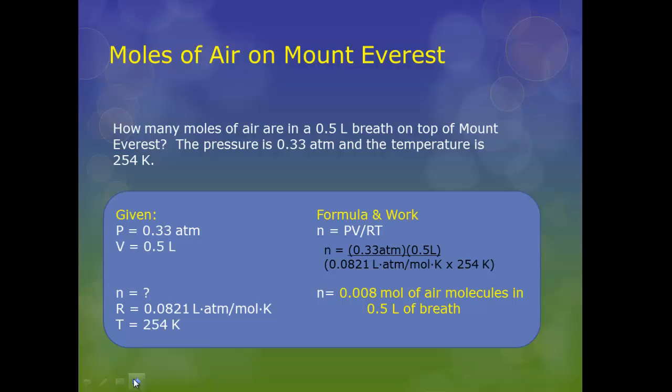So, let's look at how you would solve a question like this. How many moles of air are in 0.5 liter breath on top of Mount Everest? The pressure is 0.33 atmospheres, and the temperature is 254 Kelvin. It's a good idea to always write down your given, so then you can easily identify what you don't have. So, we've written down pressure as 0.33 atmospheres, as described by the question. We've identified our volume at half a liter, as identified in our question. It started out in the question about how many moles of air, so that's your N, so that's your question mark, because there's no number given to us. Our pressure units are in atmospheres, so we use the gas law constant shown here. And then it tells us that our temperature is at 254 Kelvin.